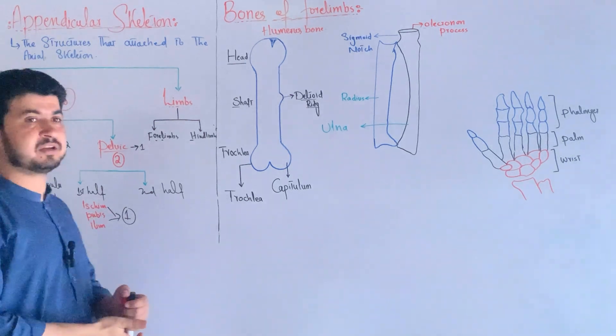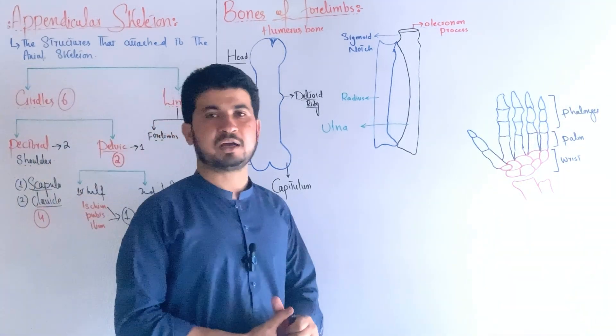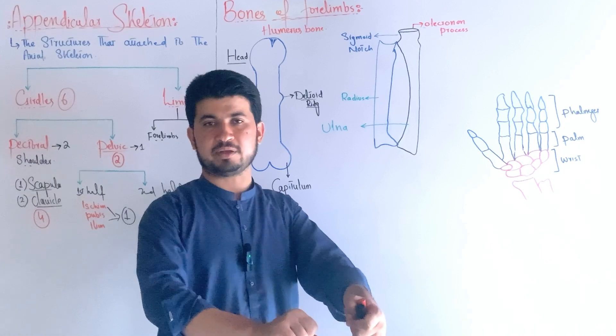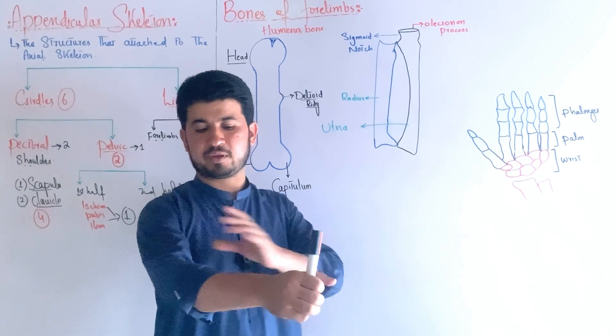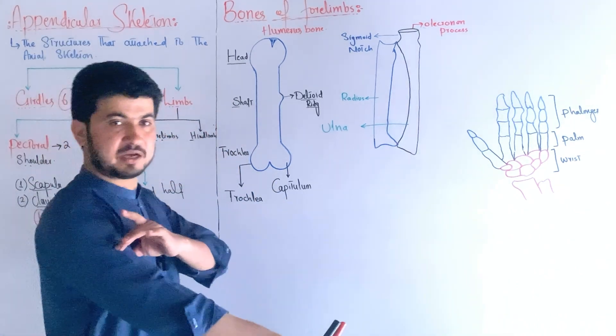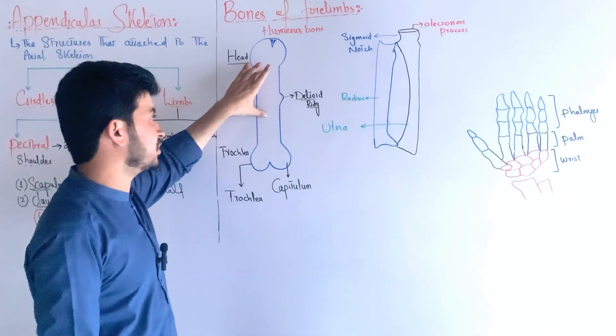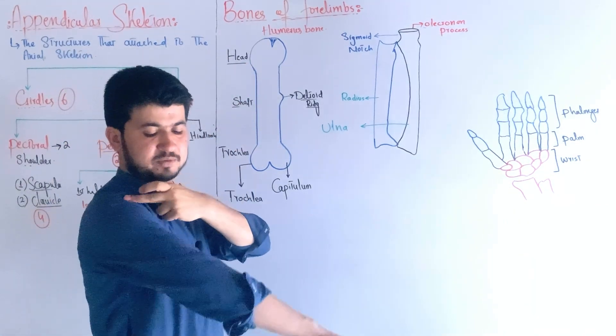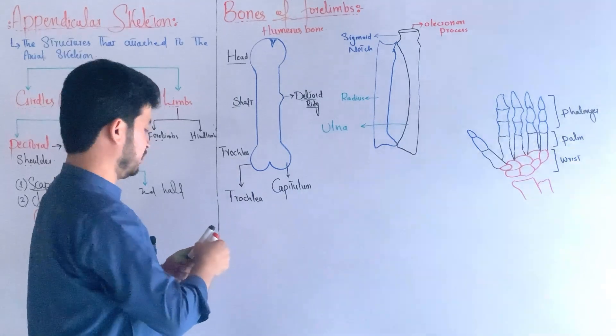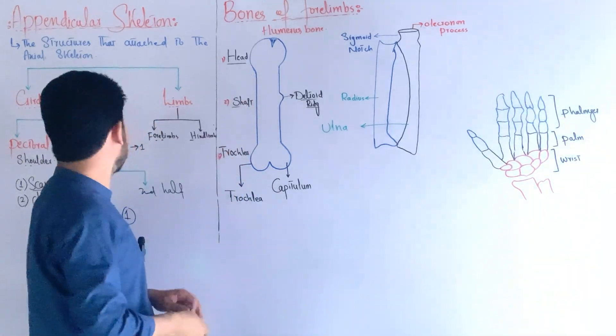Now the limbs. The forelimb has three parts - the upper part, the middle part, and the hand at the last. In the upper part of the limb, one bone is present - the humerus bone. The humerus bone has three parts - the head, the shaft, and the lower end. The head part articulates with the glenoid cavity of the pectoral girdle.